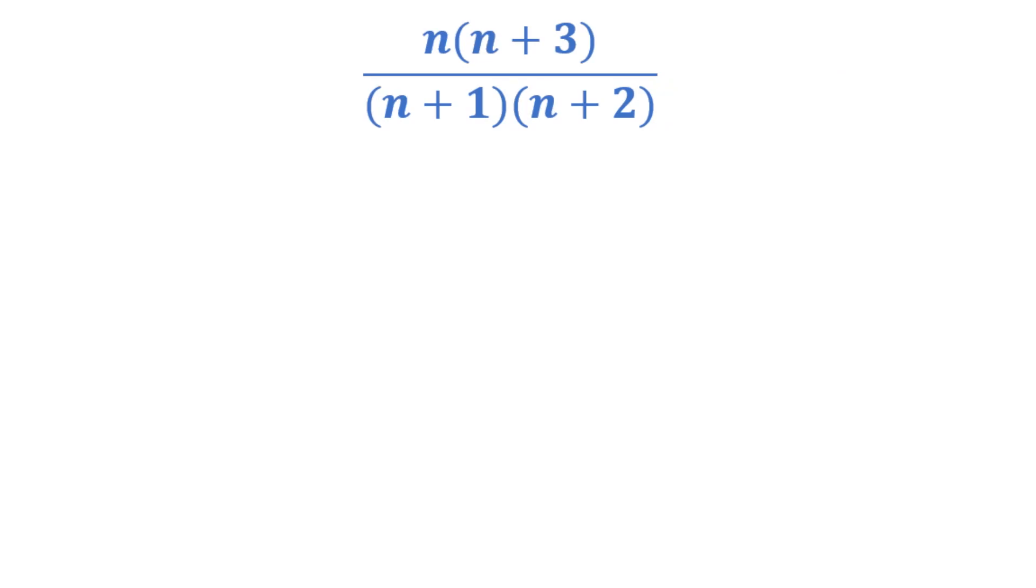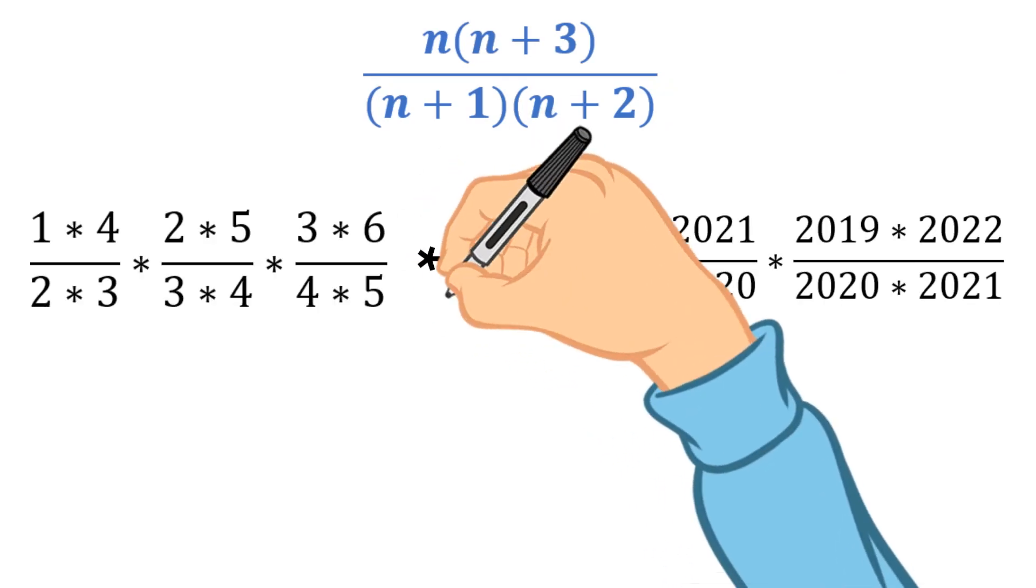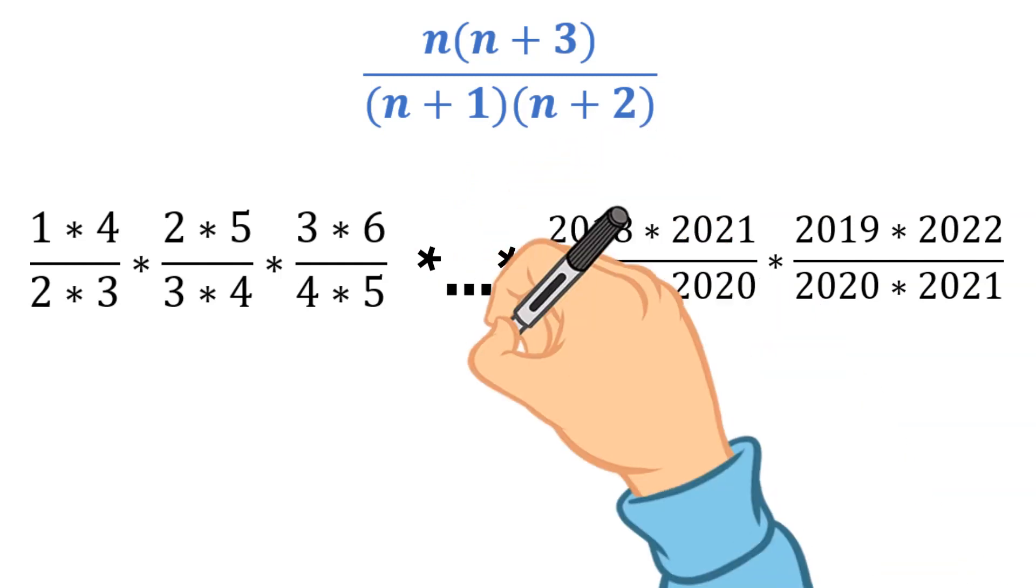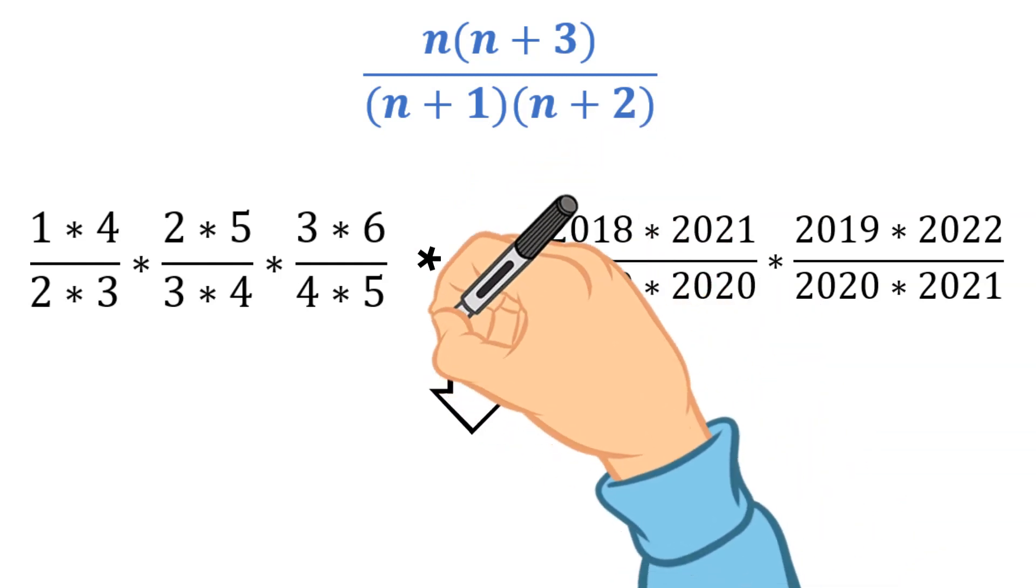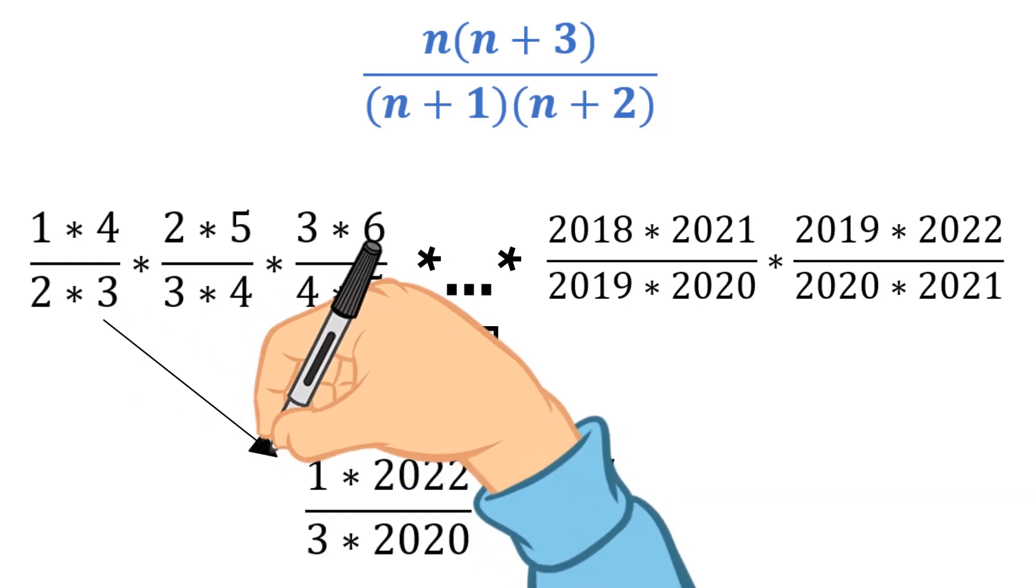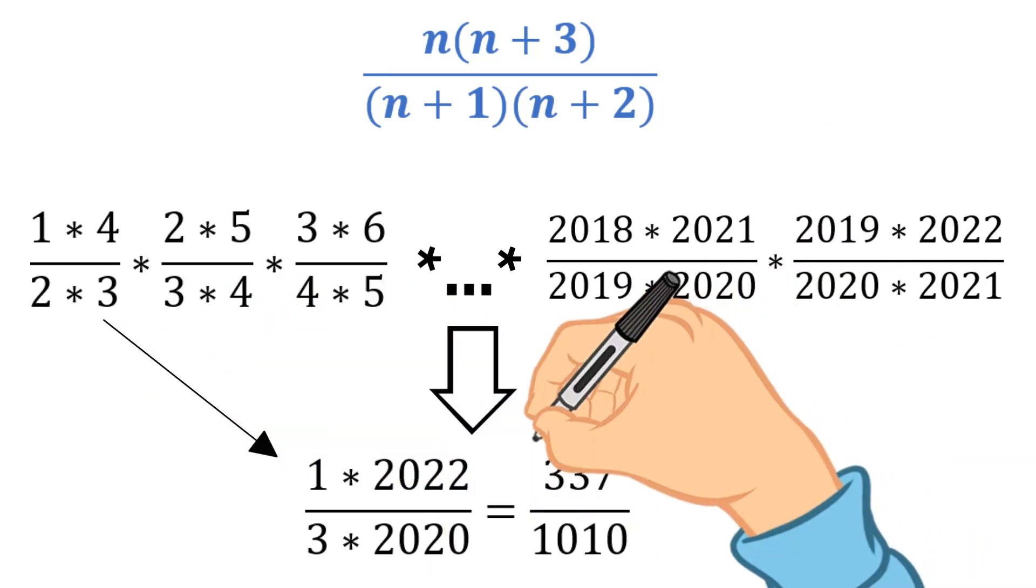Let's write together the first three and the last three components of the product. As you might have already guessed, all middle components will be cancelled out, leaving only the 2 numbers from the first fraction and similarly 2 numbers from the last one. You can stop the video here and check it yourself.